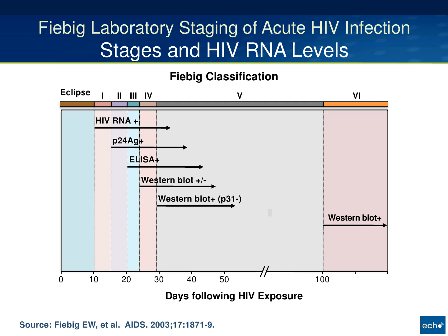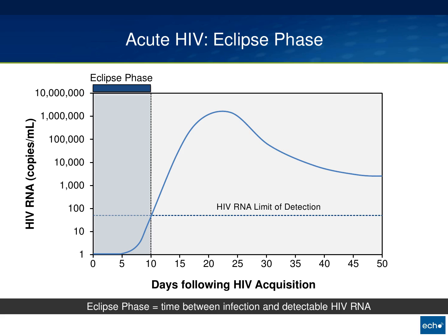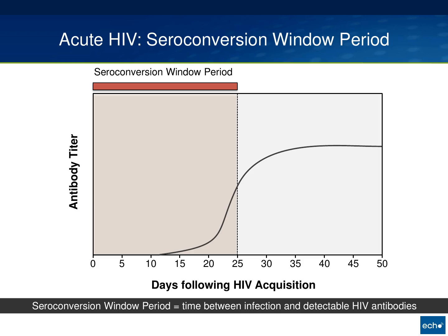The western blot is far inferior for detecting persons in the acute phase of HIV. Because some bands turn positive while others haven't yet, this is where you often get indeterminate results with western blots in people who are seroconverting. The eclipse phase is the time period between infection and when the laboratory will detect HIV RNA — on average approximately 10 days, ranging from 8 to 17 days or more. The seroconversion window period is the time between infection and detectable HIV antibodies, typically about two weeks after the eclipse phase.